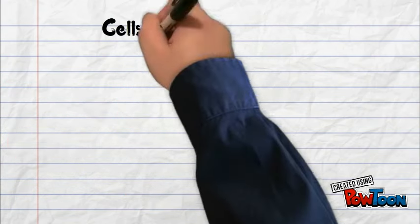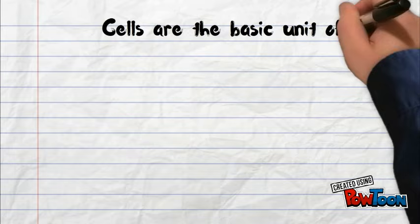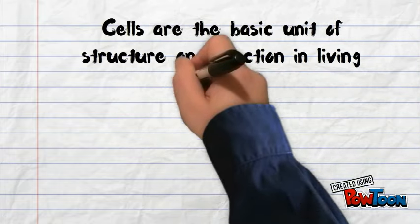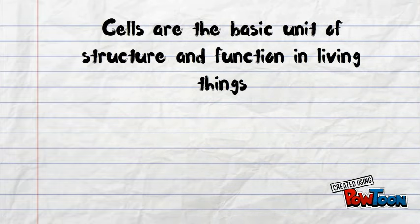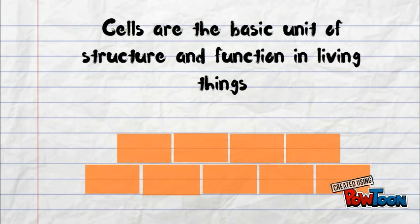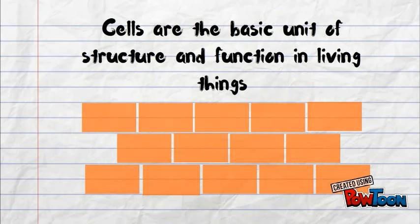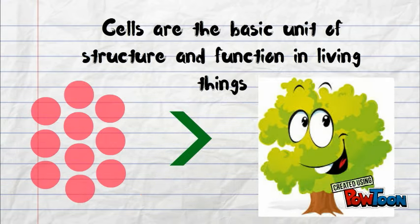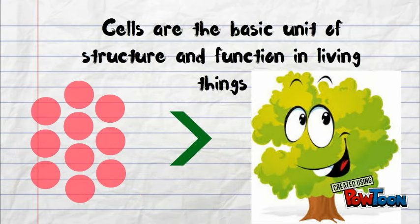Let's go back to that second part. Cells are the basic unit of structure and function in all living things. What does this mean? This means that cells are the building blocks of life. Cells make up every living thing, forming their parts, giving them structure, and working to make sure the body is healthy and functioning.